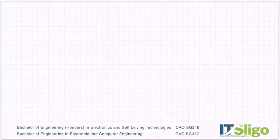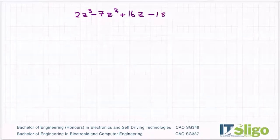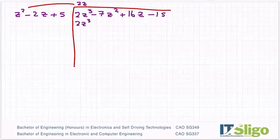One way is to long divide the quadratic into the cubic. So I have 2z cubed minus 7z squared plus 16z minus 15, and I'm long dividing by z squared minus 2z plus 5. Multiply z squared minus 2z plus 5 by 2z to get 2z cubed minus 4z squared plus 10z.